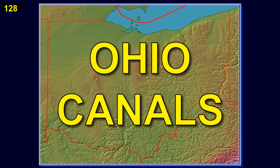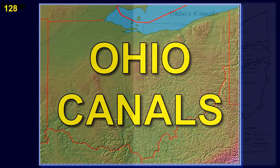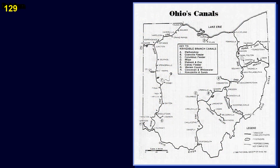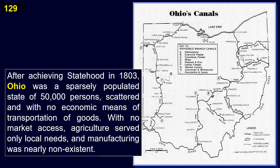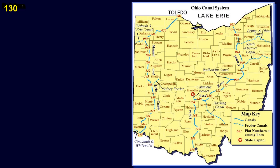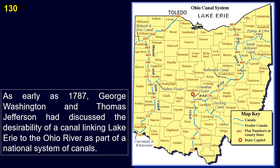The canals in Ohio: after achieving statehood in 1803, Ohio was a sparsely populated state of 50,000 persons with no economic means of transportation of goods. With no market access, agriculture served only local needs, and manufacturing was nearly non-existent. As early as 1787, George Washington and Thomas Jefferson had discussed the desirability of a canal linking Lake Erie to the Ohio River as part of a national system of canals.